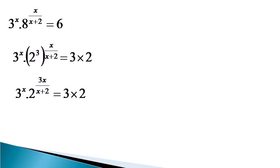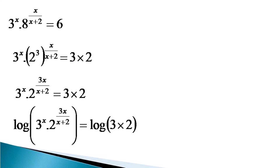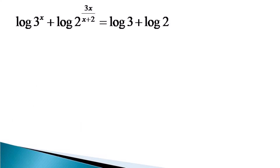And now, as usual, we take the log of both sides and use the multiplication rule of log, where multiplying terms are added. So the equation becomes log 3 raised to the power x plus log 2 raised to the power 3x over x plus 2, equal to log 3 plus log 2.